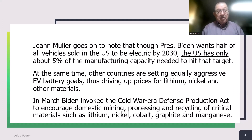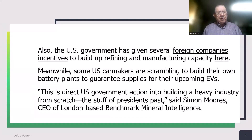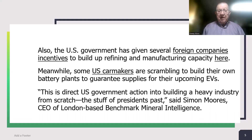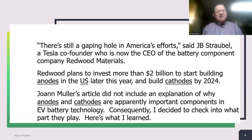In March, Biden invoked the Cold War-era Defense Production Act to encourage domestic mining, processing, and recycling of critical materials such as lithium, nickel, cobalt, graphite, and manganese. The US government has also given several foreign companies incentives to build refining and manufacturing capacity here in the US. Meanwhile, some US car makers are scrambling to build their own battery plants to guarantee supplies for upcoming electric vehicles. Simon Moores, CEO of London-based Benchmark Mineral Intelligence, called this 'direct government action into building a heavy industry from scratch — the stuff of presidents past.'